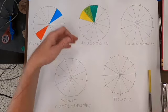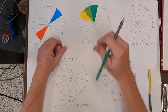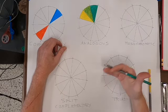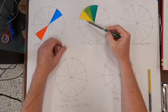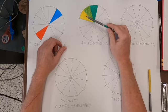All right, so there's my analogous - three colors that are next to each other on the wheel. They're very similar because it takes yellow to make green. Yellow and blue make green.